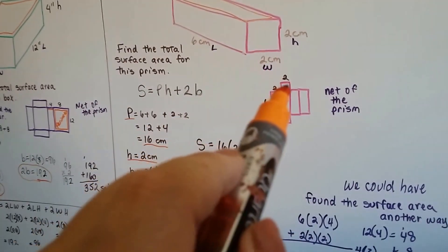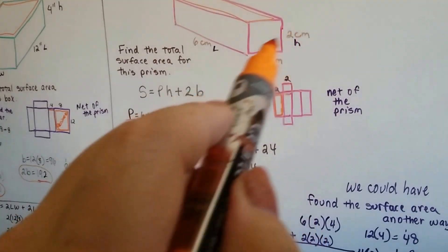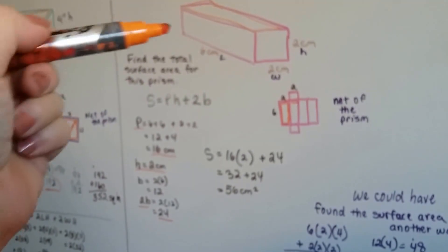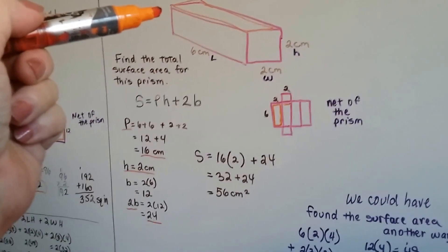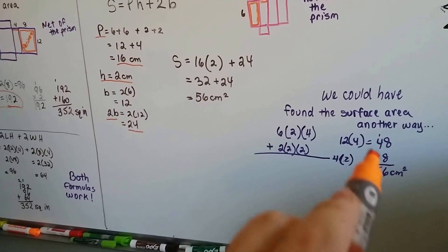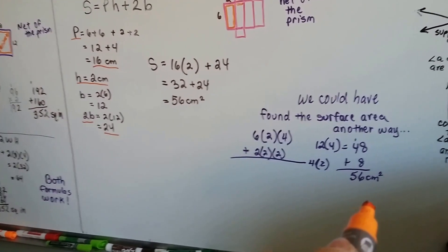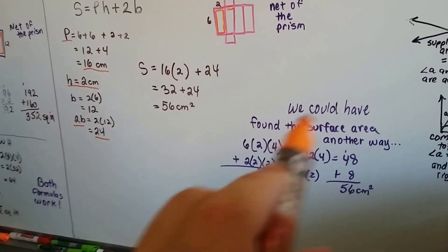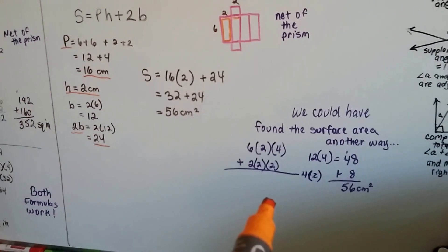And then one side, this little square, would have been 2 times 2, which is 4. And then the other side would have been 2 times 2, which is 4. We could have put those together to get 8 and then added them together. This is kind of the baby way of doing it without a formula.